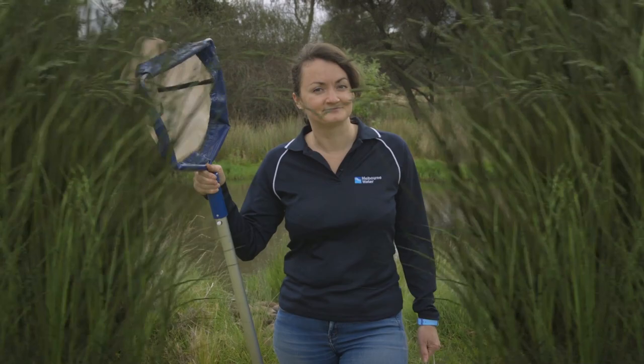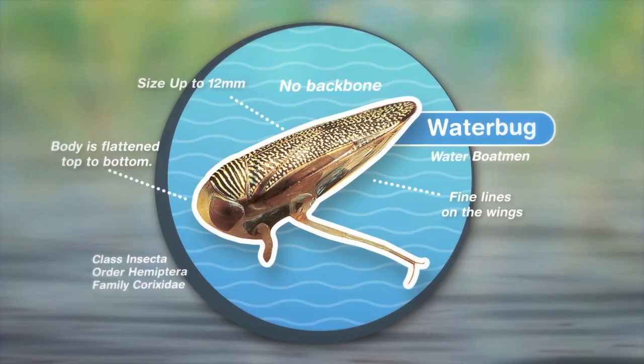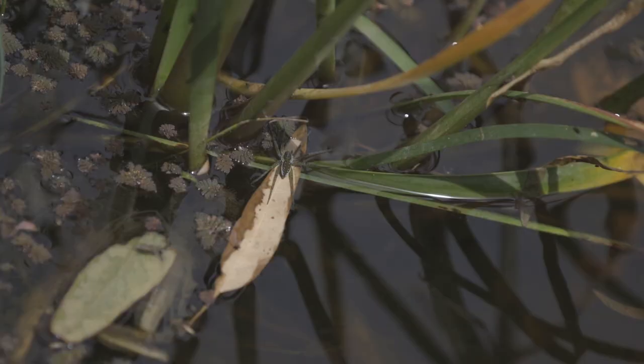Before we get started today, let's explore what macroinvertebrates or water bugs really are. Water bugs are small animals that live in the water, have no backbone and are big enough to see with the naked eye. They are fascinating to study and are a really important part of the food chain.